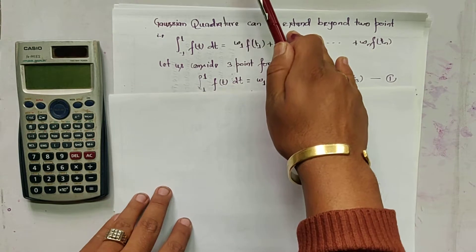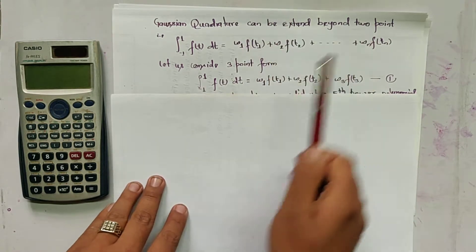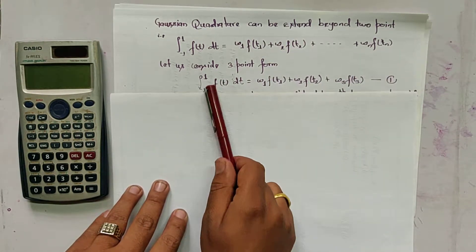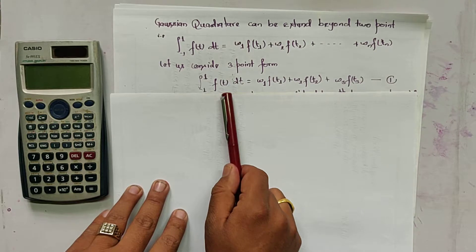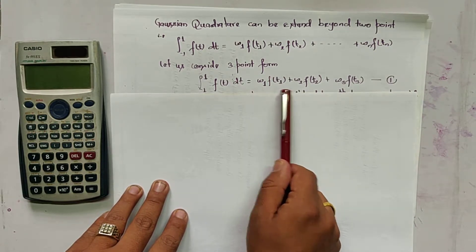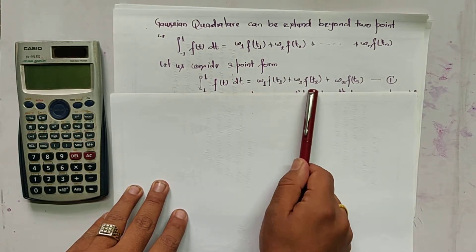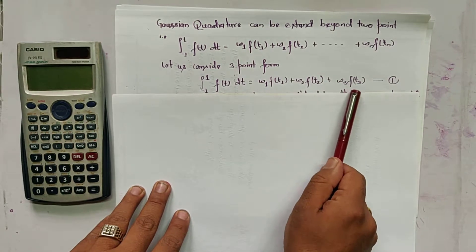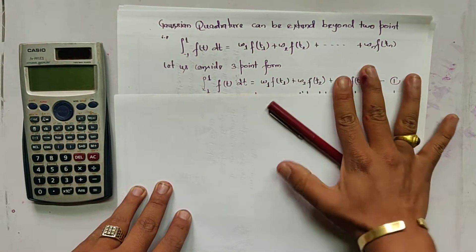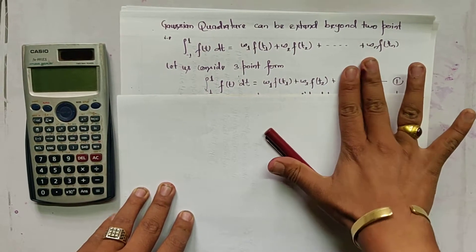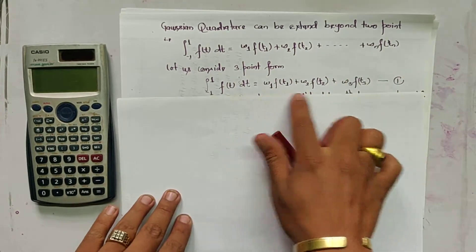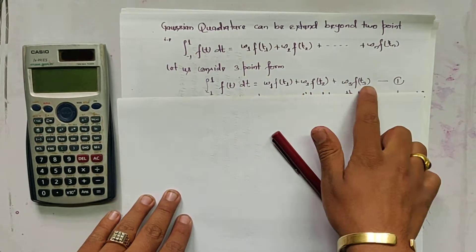Let us consider the three-point form. It can be written as the integral from minus 1 to 1 of f(t) dt equals w1·f(t1) plus w2·f(t2) plus w3·f(t3). In the previous video, we used only two terms; now, in this, we are using three terms.